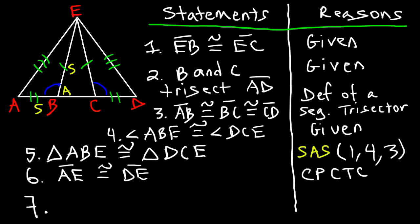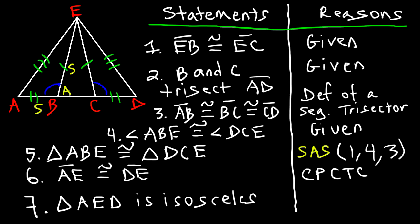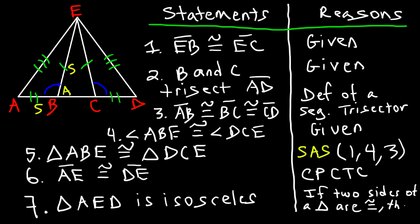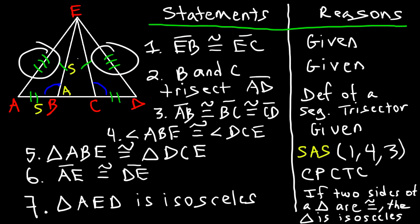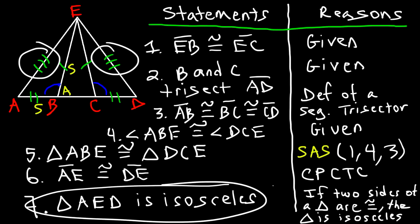Now that we've proven those two sides are congruent, we can go one step beyond CPCTC and conclude: triangle AED is an isosceles triangle. The reason: if two sides of a triangle are congruent, then the triangle is isosceles. The basic idea in any such proof is to show two sides are congruent, then make the final isosceles statement using the same reason.